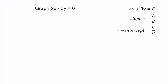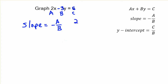Let's say they ask you to graph 2x minus 3y equals 6. Here, a is 2, b is negative 3, and c is 6. To find the slope, remember it's negative a over b — just change the sign and put a over b. So we take 2 over negative 3, which gives negative 2 thirds, but we change that sign so it becomes positive 2 over 3.